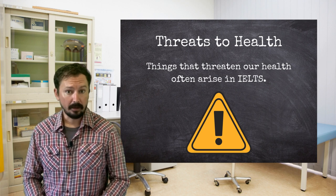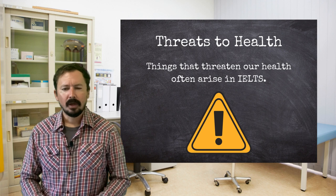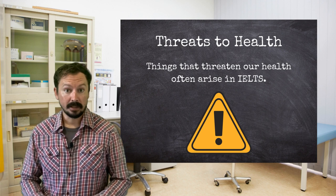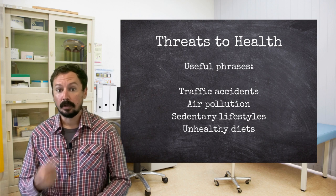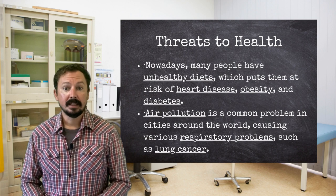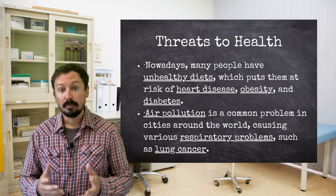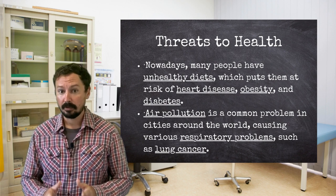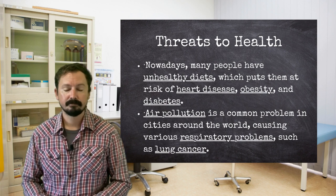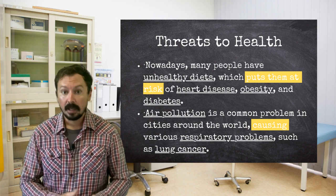When the topic of health comes up in IELTS, it is often connected to the idea of things that threaten people's health. I have frequently encountered questions about pollution, fast food, traffic, modern lifestyles, and so on, all of which suggest the idea of people getting sick or risking an early death. Thus, you should be prepared to talk about all of these. You also need to be able to connect these issues to their related health problems. For example, nowadays many people have unhealthy diets, which puts them at risk of heart disease, obesity, and diabetes. Air pollution is a common problem in cities around the world, causing various respiratory problems such as lung cancer. The phrases 'put at risk' and 'cause' are very useful here for explaining the relationship between the risk and the result.